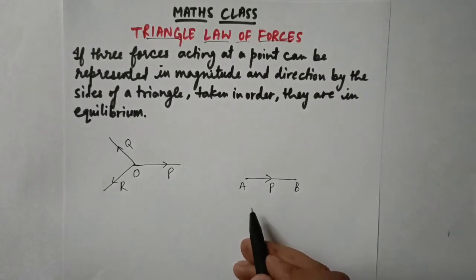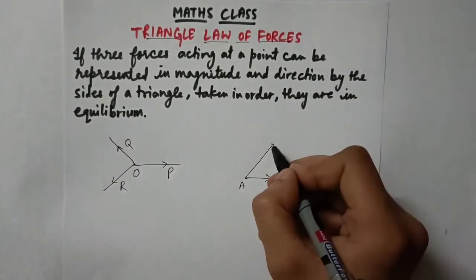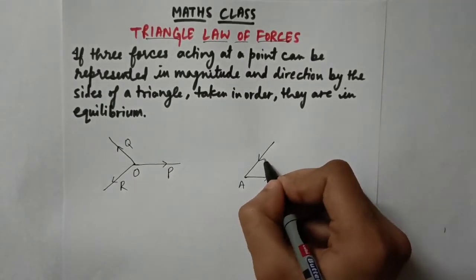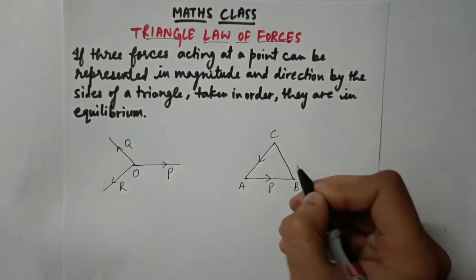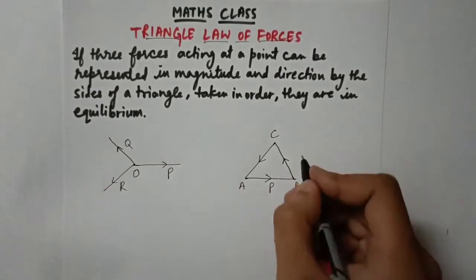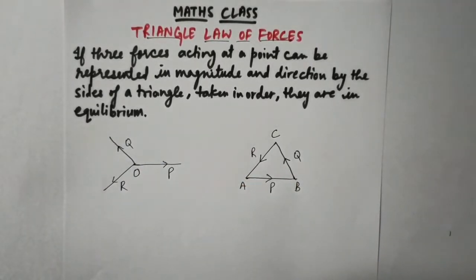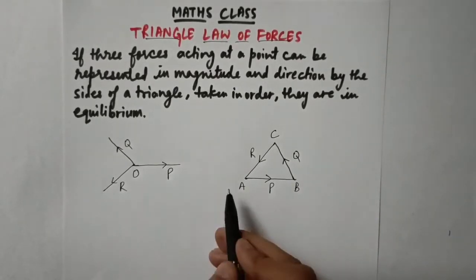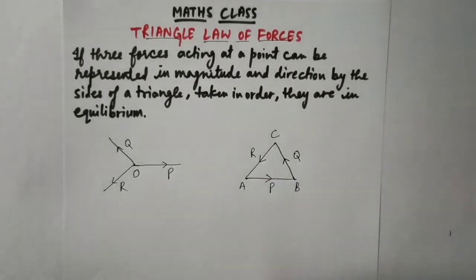The triangle would be ABC. Now for the R force — I may not be exact, but you should know this is just a rough diagram. Let this be point C. The direction should be the same. This is the Q force and this is the R force. I don't know whether I have taken the exact same magnitude or direction, but let's assume it's a rough diagram. So P, Q, and R forces are represented by the AB, BC, and CA sides of triangle ABC.